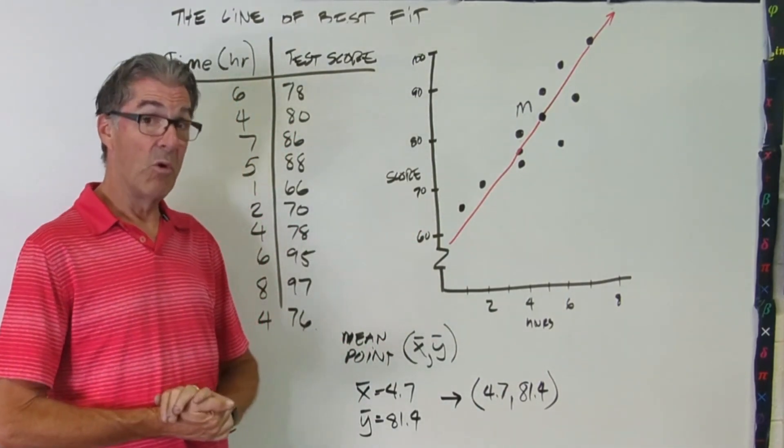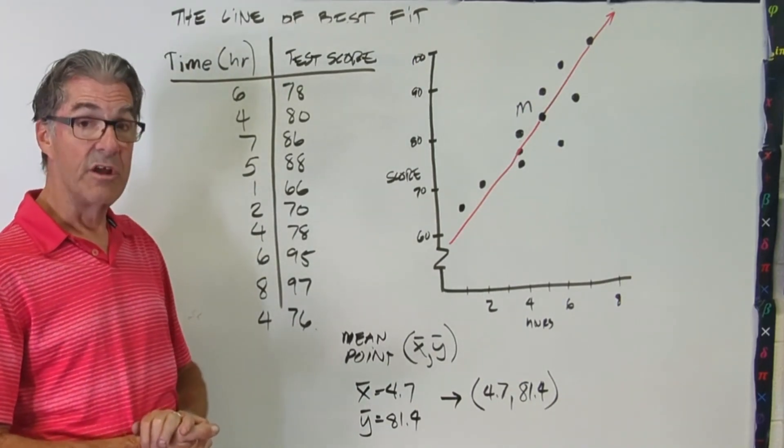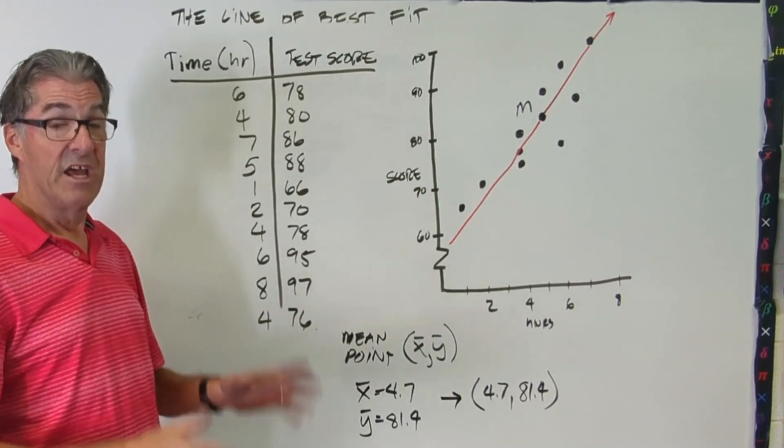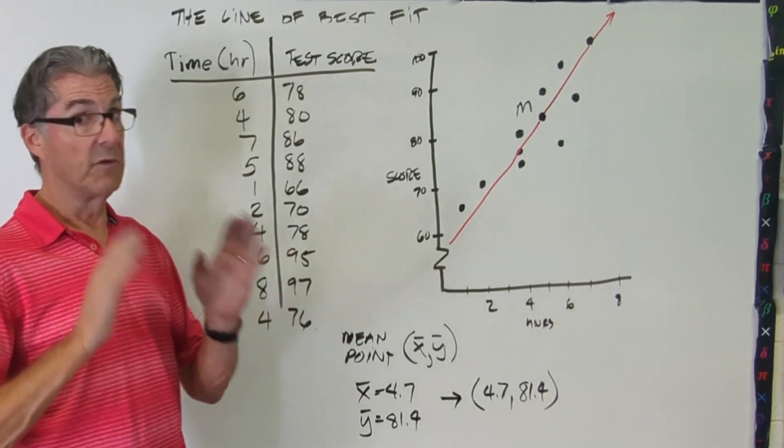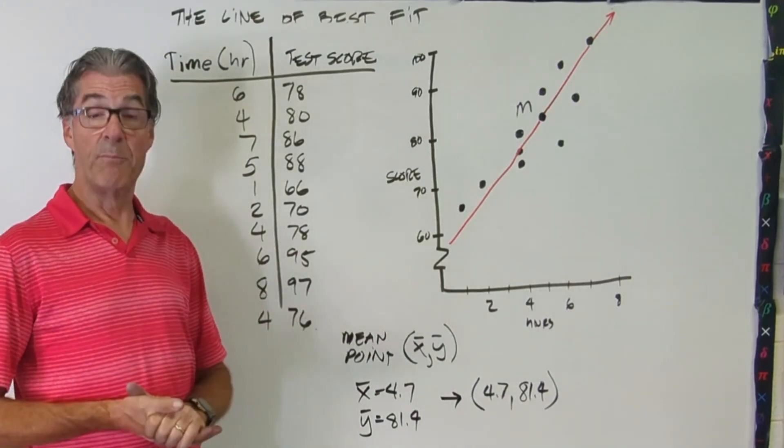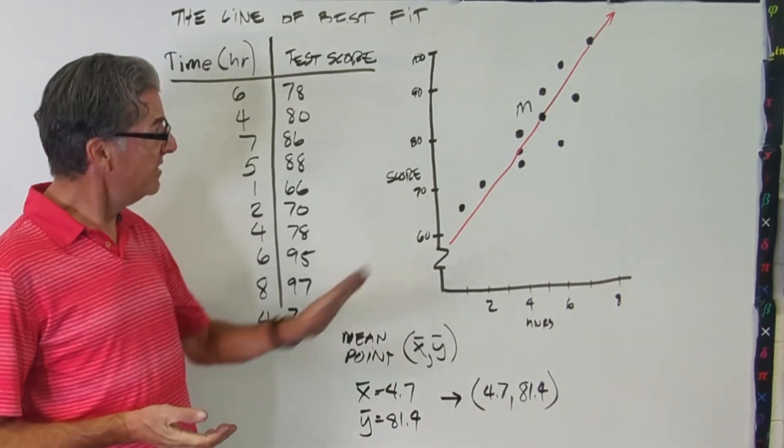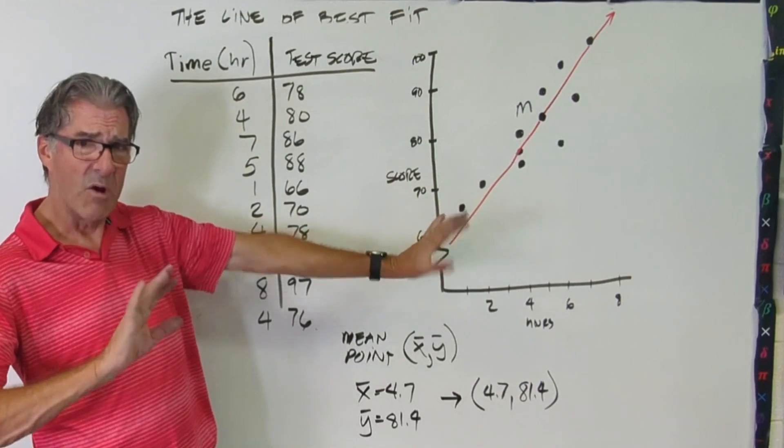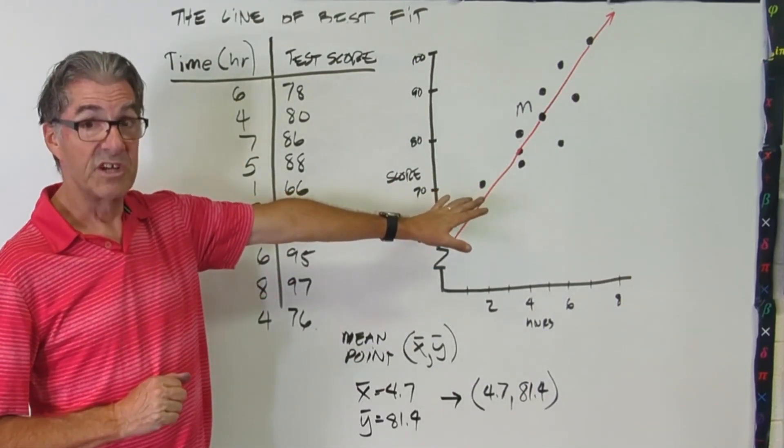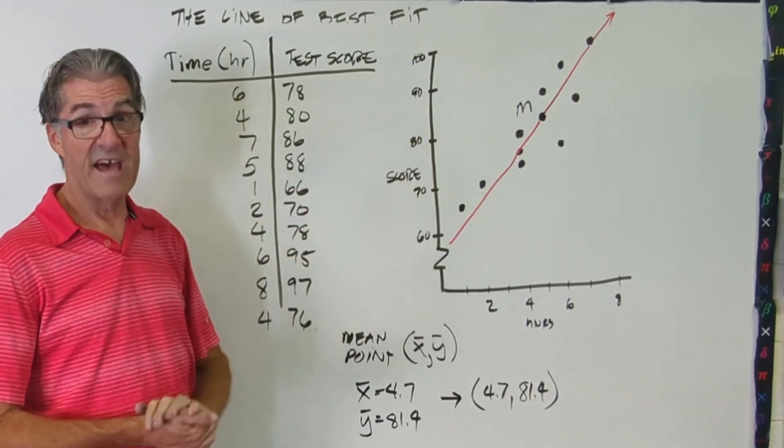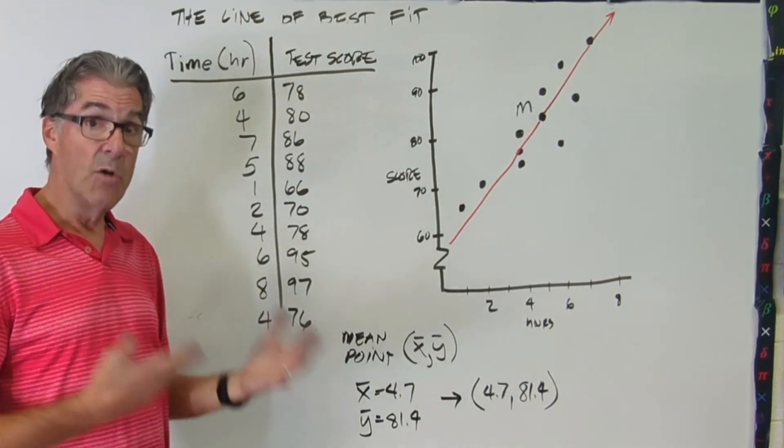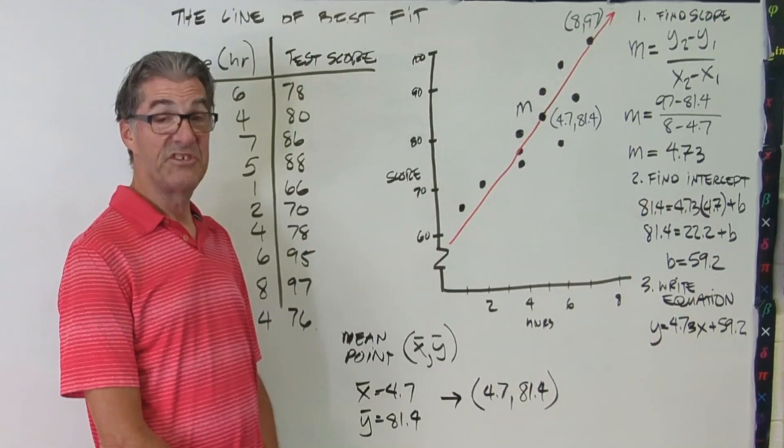Now what we can do is we can create the equation for this best fit line. Everything you need to do that is prior knowledge. So if you're feeling bold, what I would say is pause the video right now and use your graph to come up with an equation for that line. And what we're looking for is gradient intercept or slope intercept form.